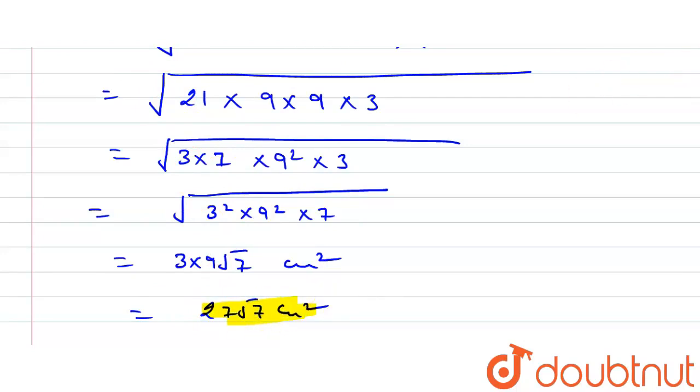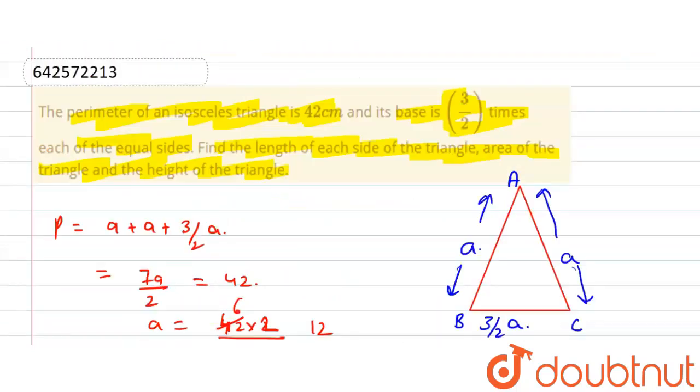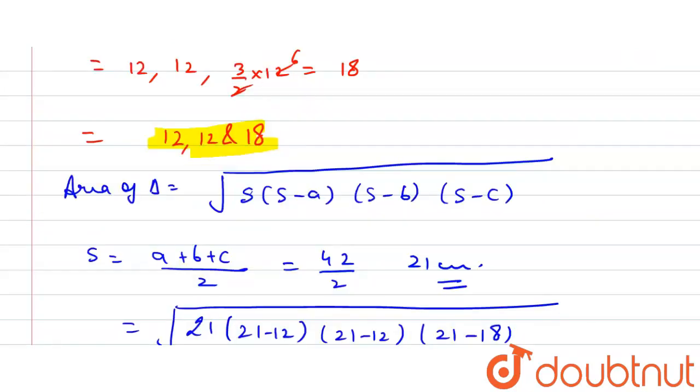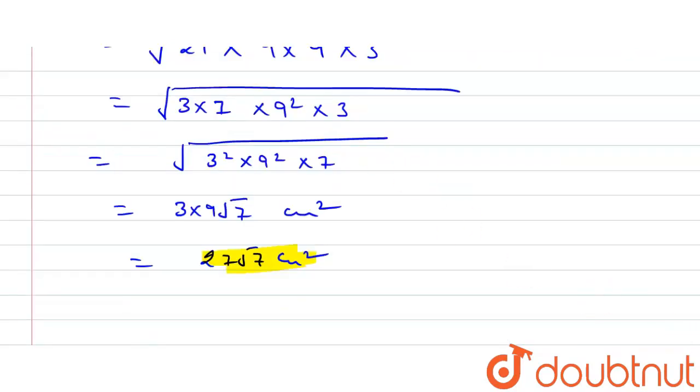Now we have to find the height of the triangle. Our base is 3 by 2, that is 18 centimeter length. Area of a triangle we can also find from the formula: 1 by 2 multiply base multiply height.